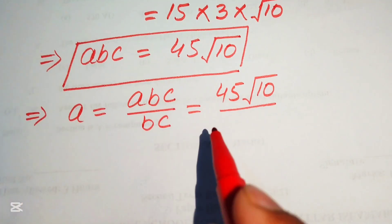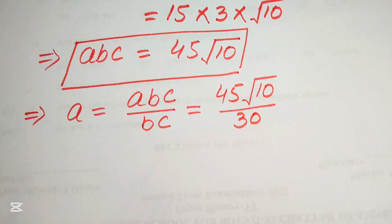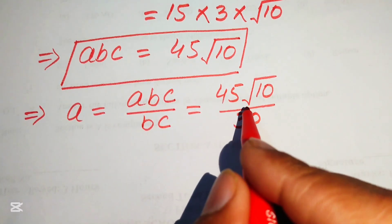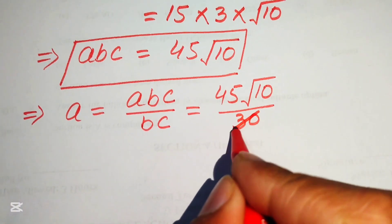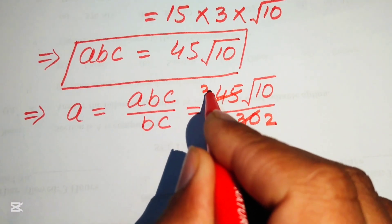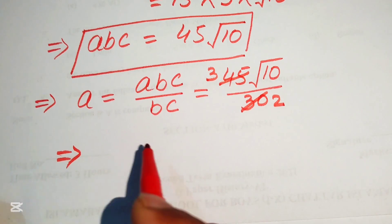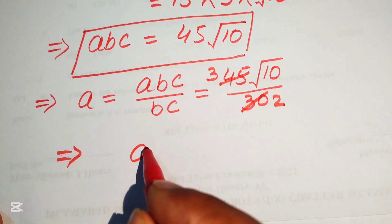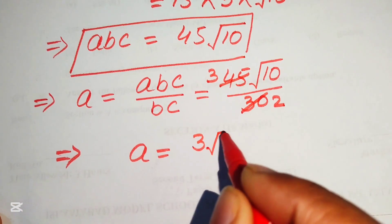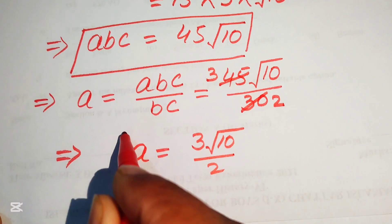Simplifying 45/30: since 15×3 = 45 and 15×2 = 30, we get a = 3√10 / 2. This is the value of a.